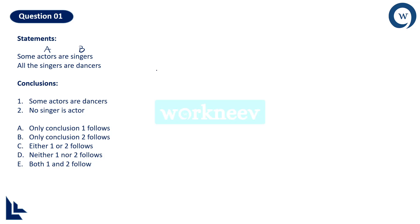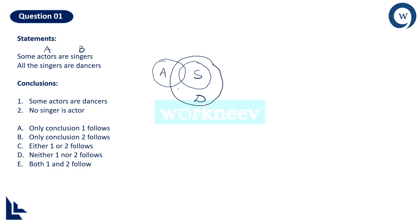Let us write the Venn diagram. Some actors are singers means there has to be a common area between actors and singers — let us write them intersecting. Then all singers are dancers means the entire singer circle has to be inside the dancer section. Now see the conclusions: Some actors are dancers — is it correct? Absolutely correct, because there is a common area between actors and dancers in the diagram. This particular region is common for both actors and dancers.